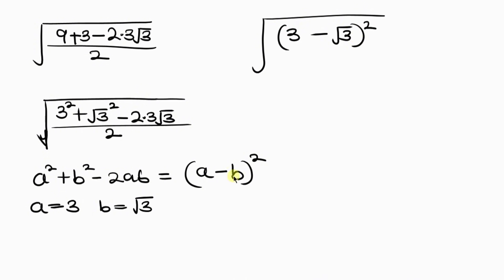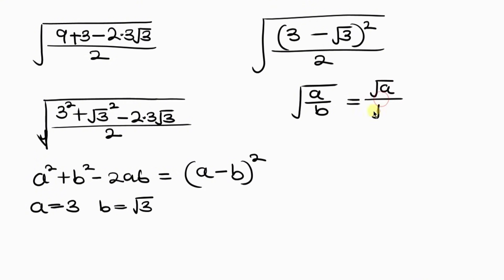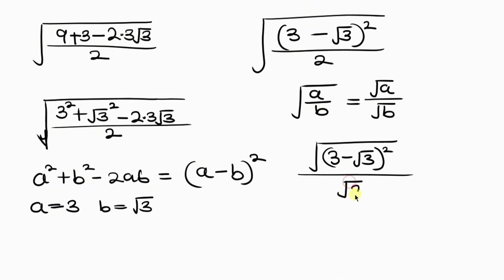Written in this form, all over the denominator which is 2. Our next step will be for us to apply a property of radicals which says when I have the square root of A all over B, this can be written as the square root of A all over the square root of B. Applying this, the expression will be the square root of 3 minus the square root of 3, all squared, all over the square root of 2. Now notice that the square root can cancel out the square, leaving behind 3 minus the square root of 3 on the numerator, all over the square root of 2.